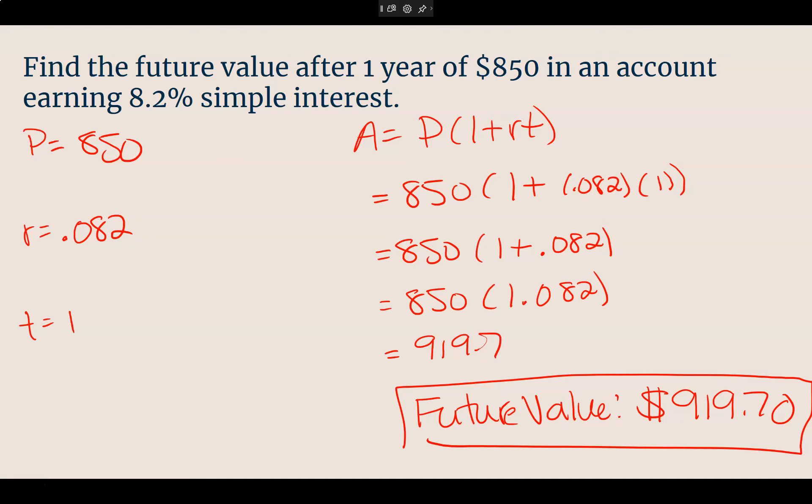Bonus question. Are you borrowing money or did you earn money? You earned money. How do you know? It says future value. Beautiful. Bonus question. How much interest did you earn? Beautiful. $69.70. Does that make sense? Good. Any questions?